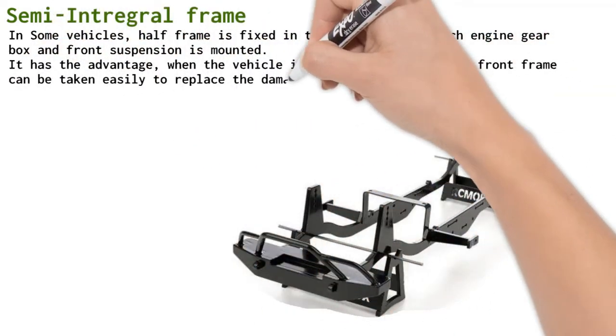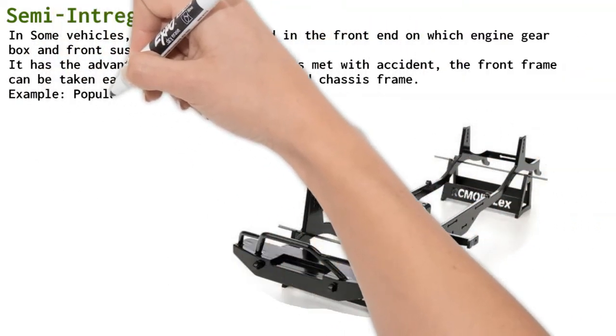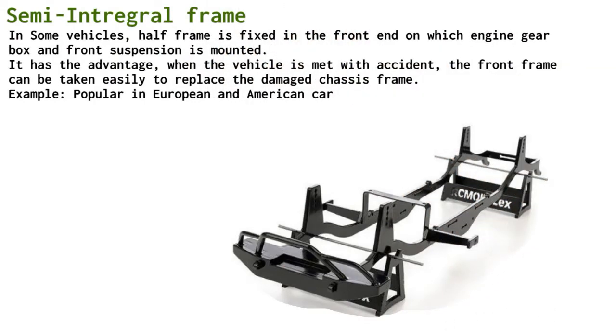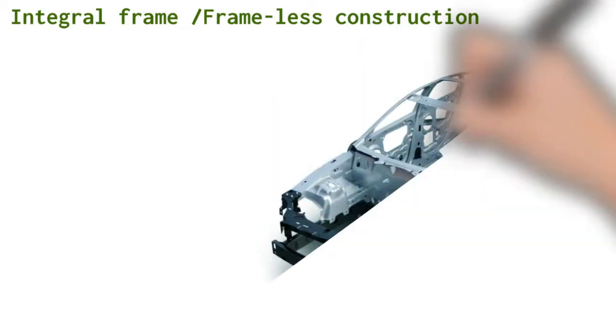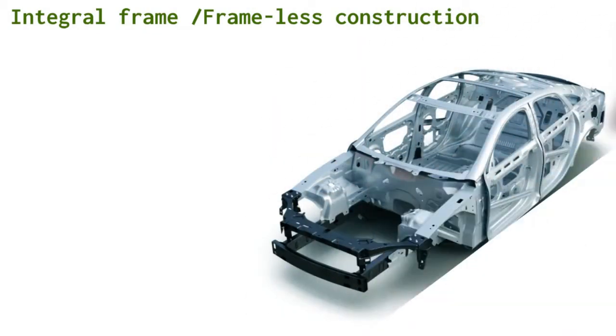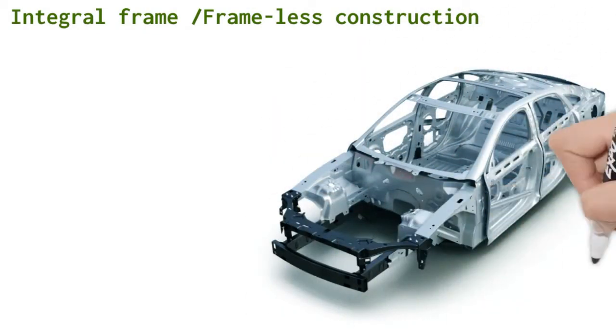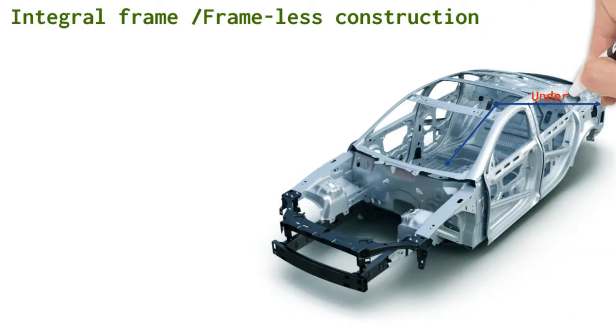Integral frame or frameless construction. In this type of construction, there is no frame. It is also called unitized frame body construction.